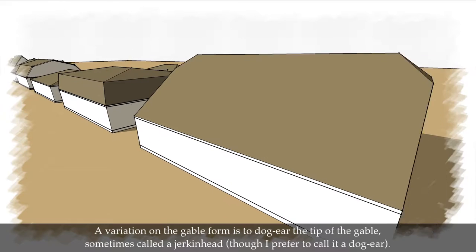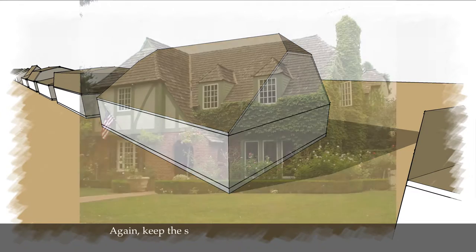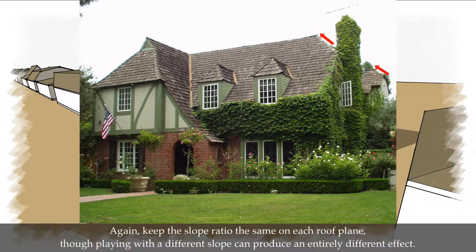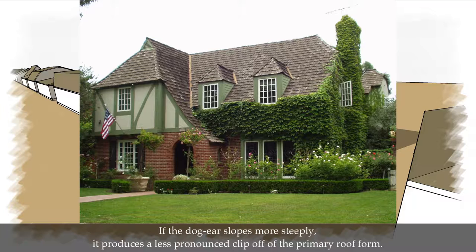A variation in the gable form is to dog ear the tip of the gable, sometimes called a jerkin head, though I prefer to call it a dog ear. Again, keep the slope ratio the same on each roof plane, though playing with a different slope can produce an entirely different effect. If the dog ear slope is much steeper, it produces a less pronounced clip off of the primary roof form.